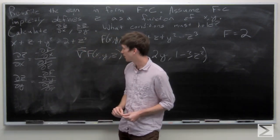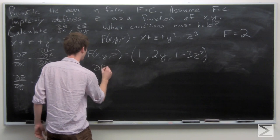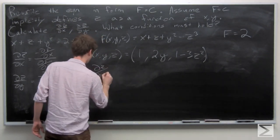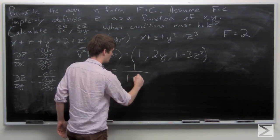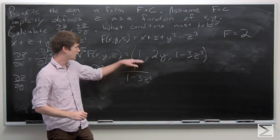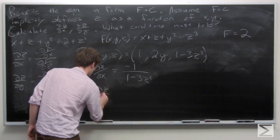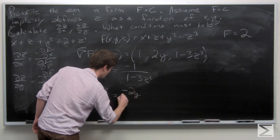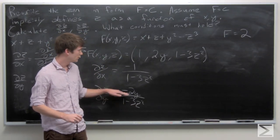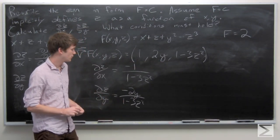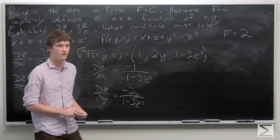Now we can use this information to plug into our equation. We calculate that the partial derivative of z with respect to x is negative 1 over 1 minus 3z squared, by taking the negation of our first component divided by our third. And then our partial derivative of z with respect to y is the negation of our second component, negative 2y, over the quantity 1 minus 3z squared. So these are our partial derivatives, assuming that f equals c implicitly defines z as a function of x and y.